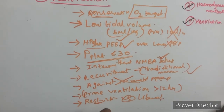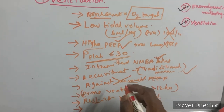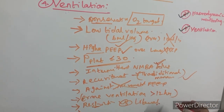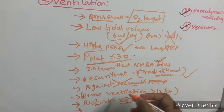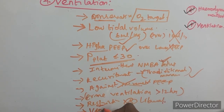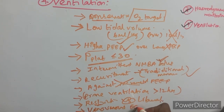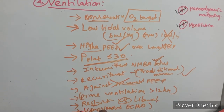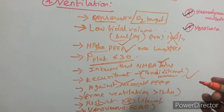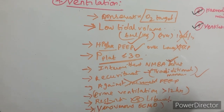If ventilatory strategies fail in ARDS patients and adequate oxygenation cannot be achieved, veno-venous ECMO can be considered. This is the preferred rescue option when the intubated patient is not improving and end-organ damage is progressing.